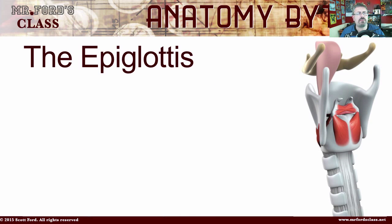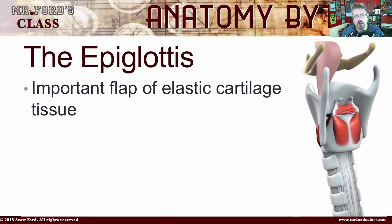The epiglottis is an important flap of elastic cartilage tissue. I have an entire video on the histology of the different types of connective tissue, so be sure to check that out. The epiglottis is found at the entrance of the larynx and it's spoon-shaped. You can see in the image that little thing sticking up — that would be the epiglottis.